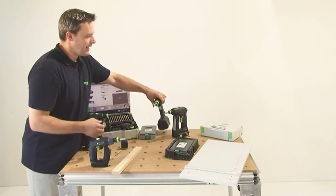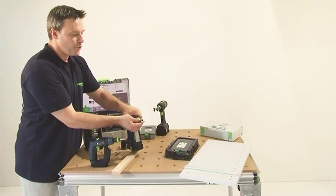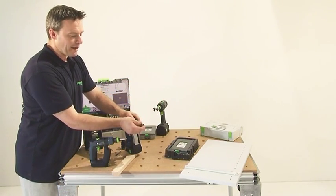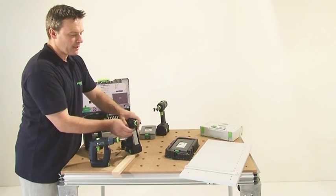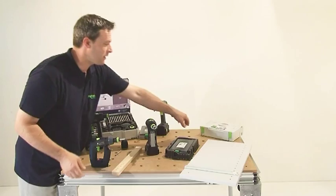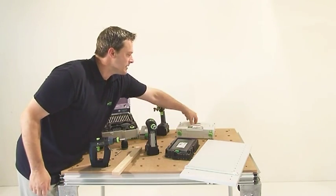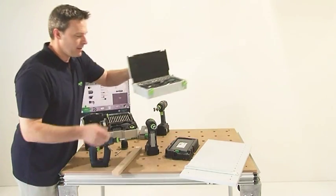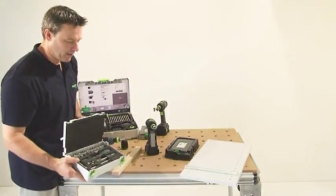And last but not least, the ratchet for normal screws and nuts. This is especially useful in narrow assembly areas of kitchens or for fittings in bathrooms. Here is a small ratchet set, which you can also combine with the Centrotec system.